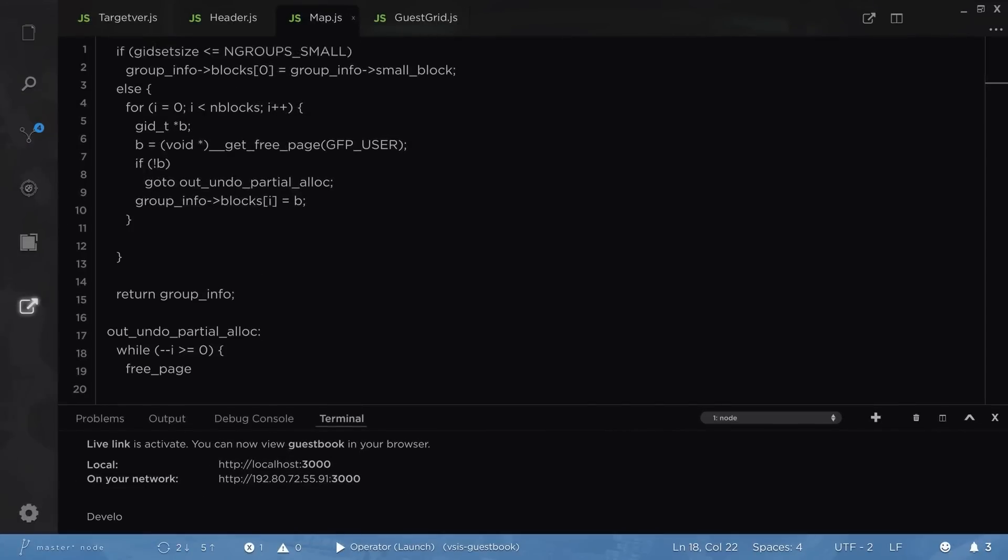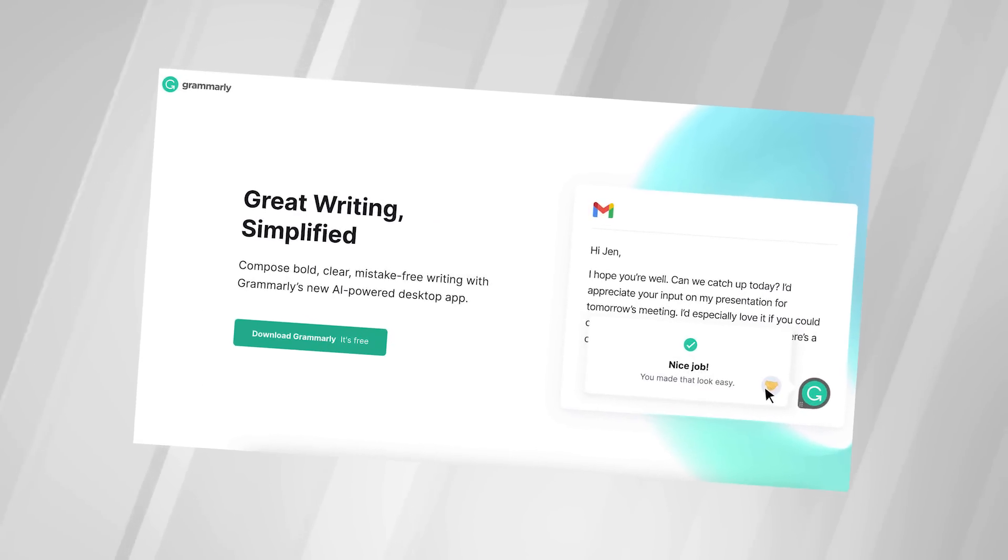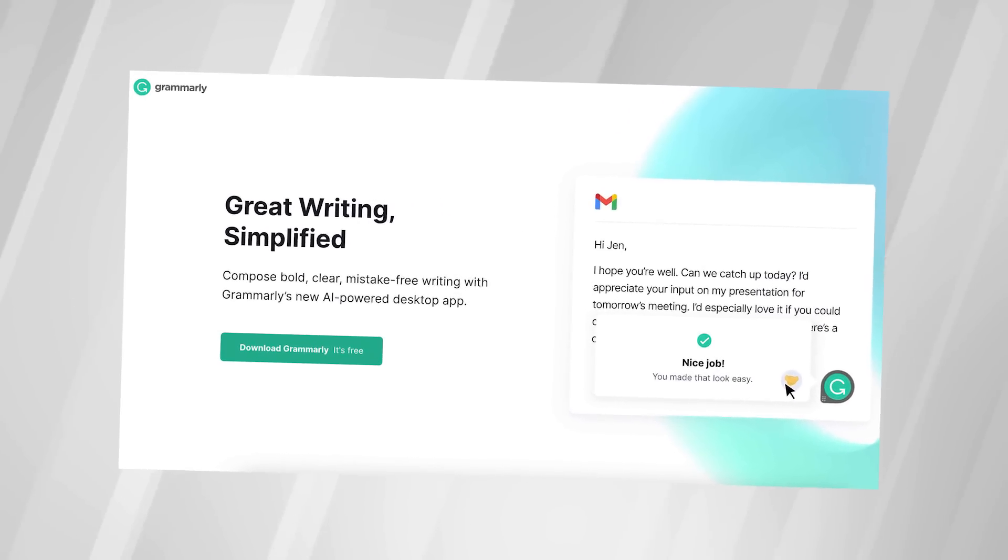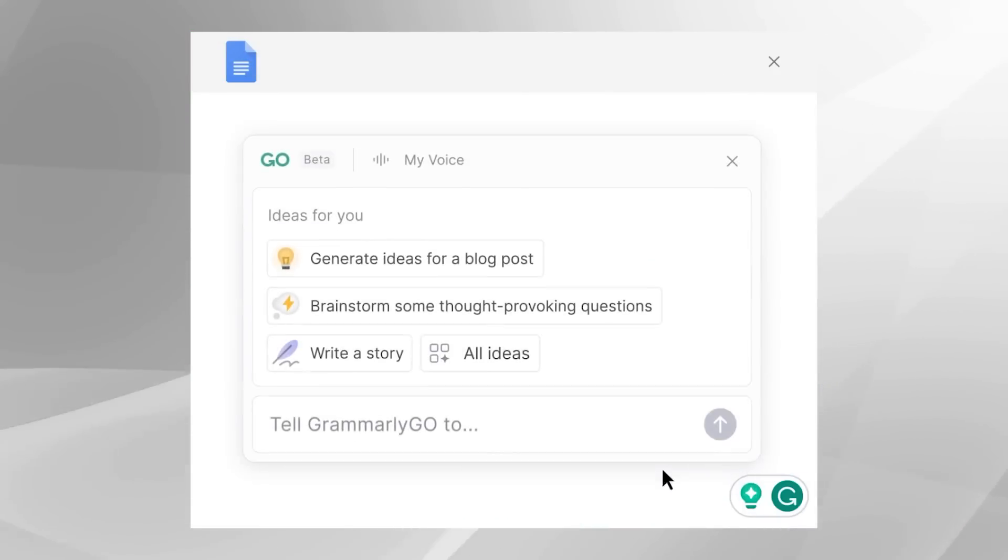The rise of artificial intelligence has had a significant impact on various industries, and editing and proofreading are no exception. AI-powered tools, such as Grammarly and other grammar-checking software, have made it easier to identify and correct grammatical errors,